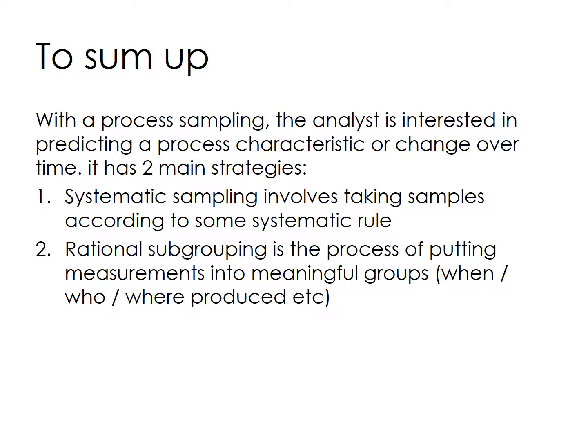To sum up, with process sampling the analyst is interested in predicting a process characteristic or change over time. It has two main strategies: systematic sampling involves taking samples according to some systematic rule, and rational subgrouping is a process of putting measurements into meaningful groups — for example, by when, who, or where the product was produced.